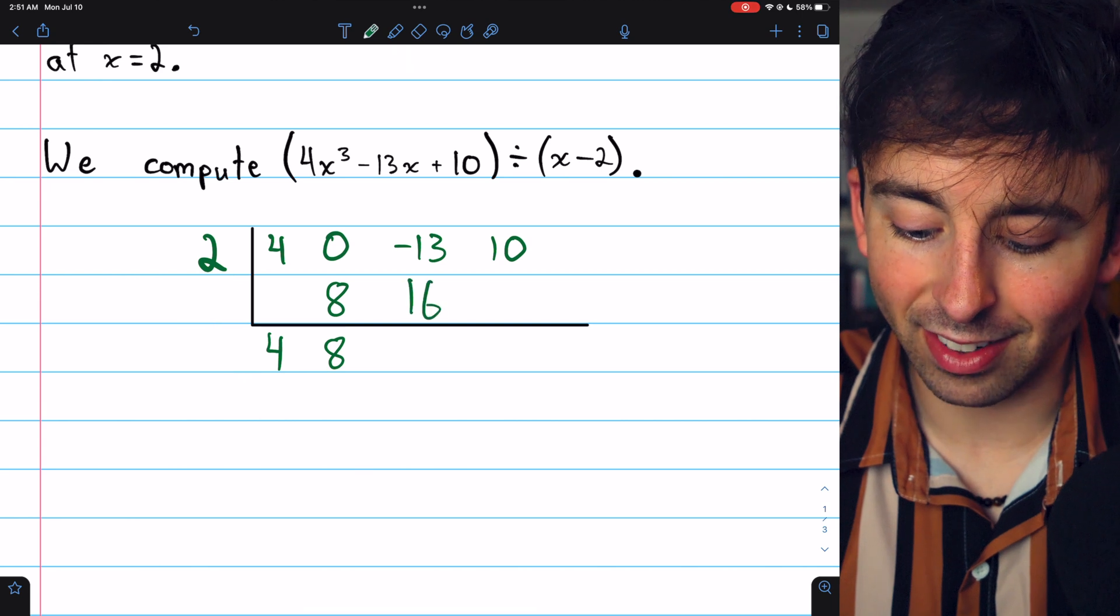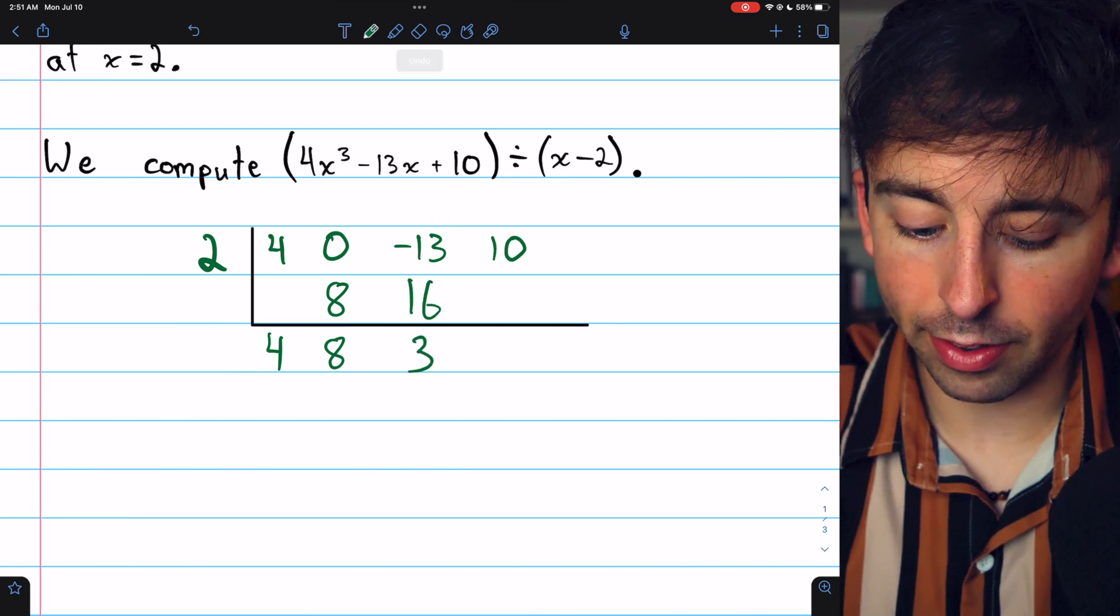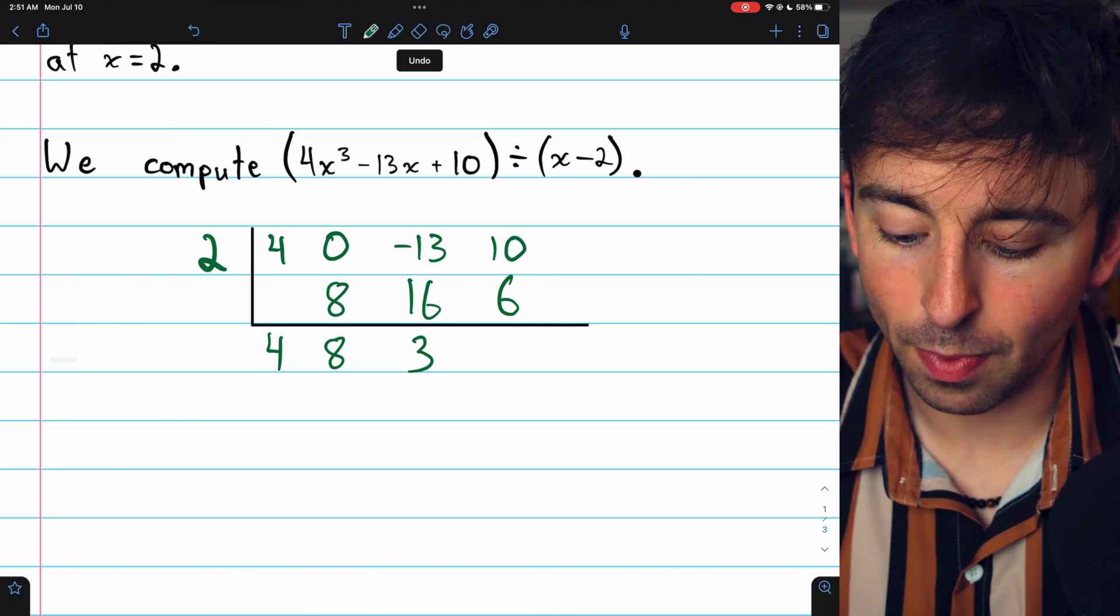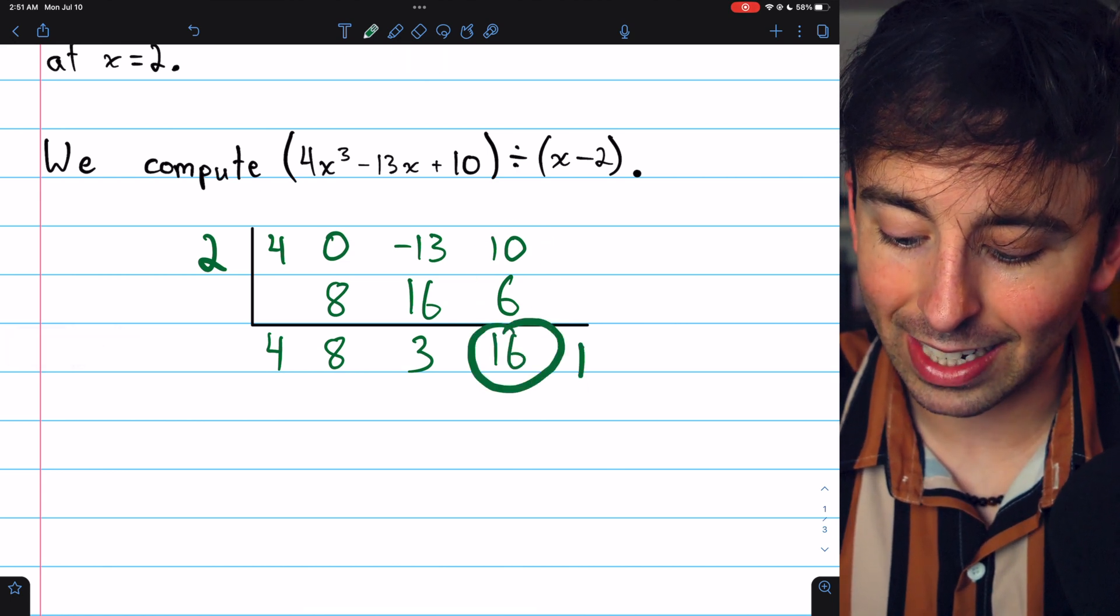Hit it with another k, that's 16. Add those together, positive 3. Hit it with that k, that's 6. Add those together, and we get 16. And that is our remainder.